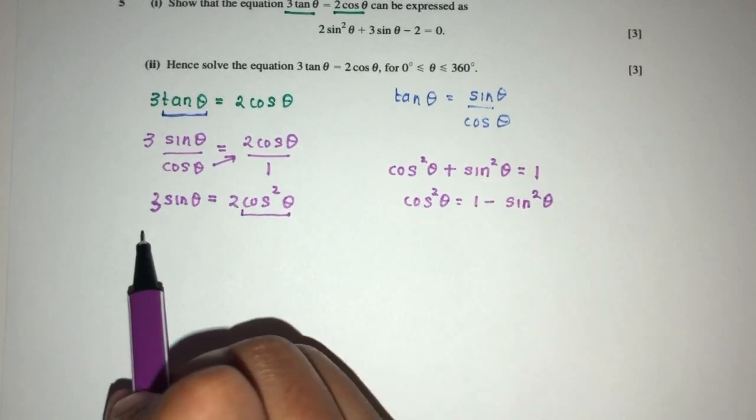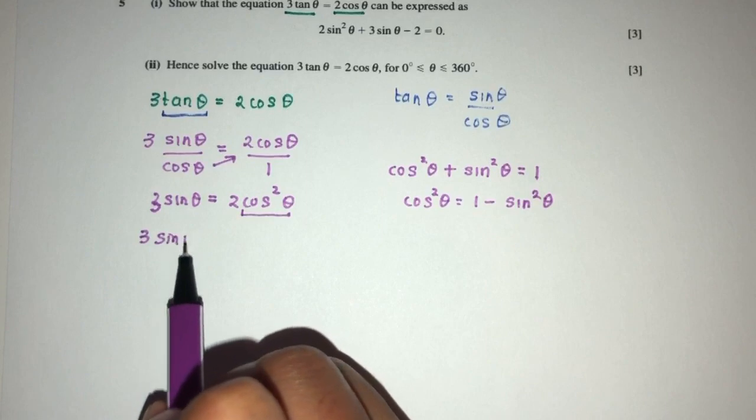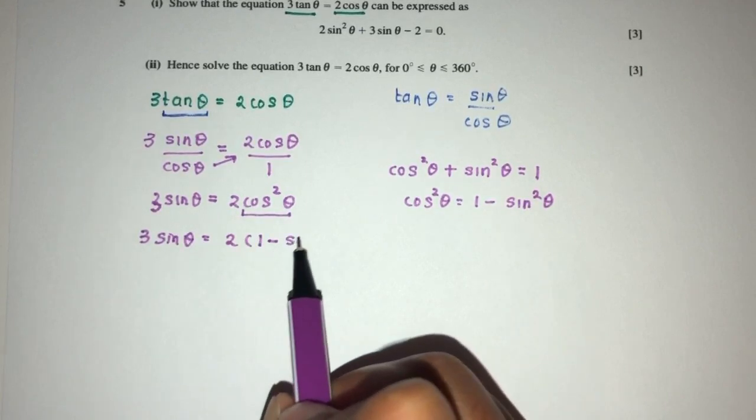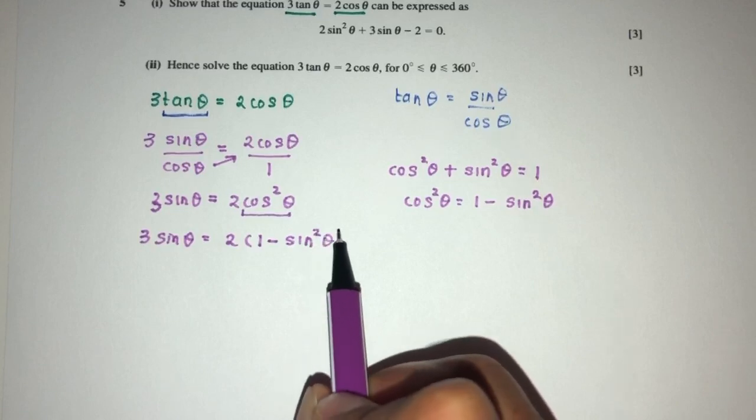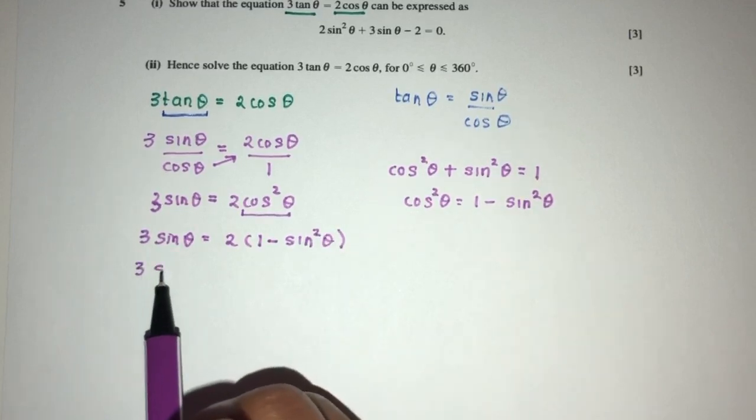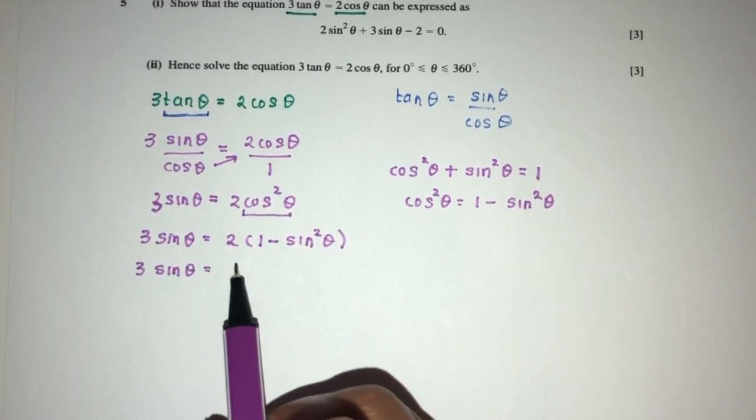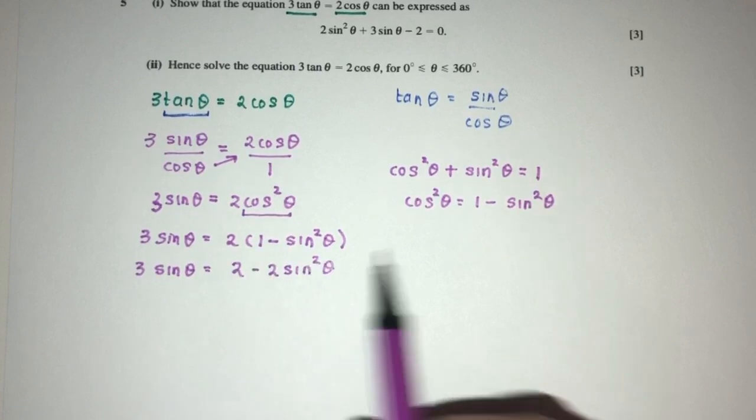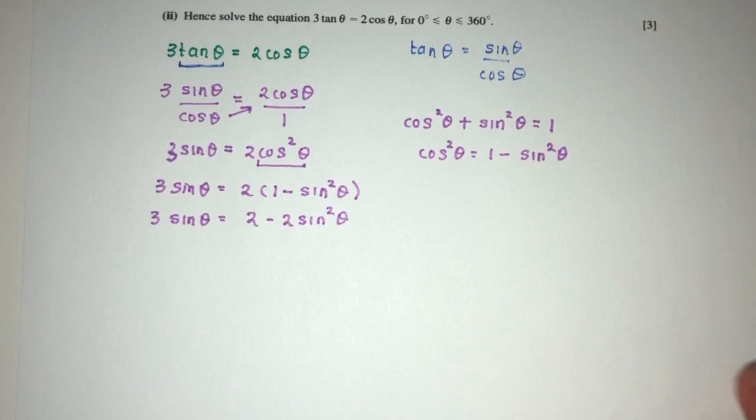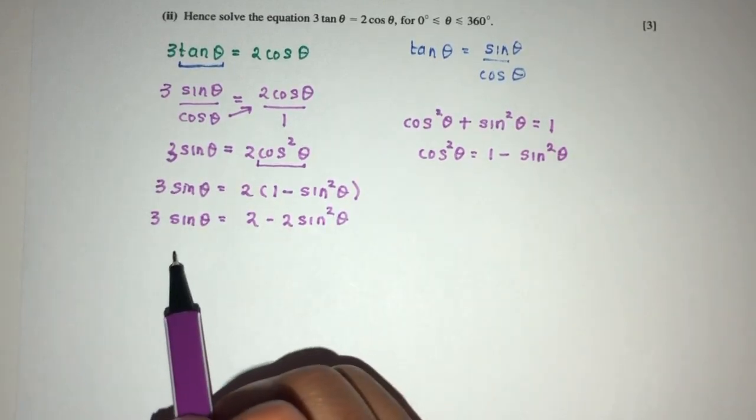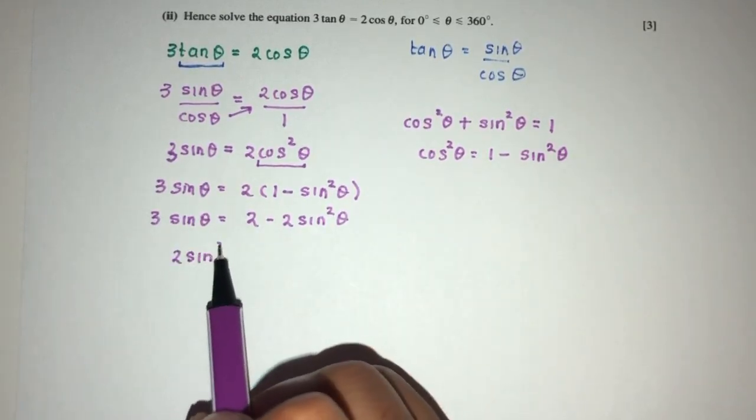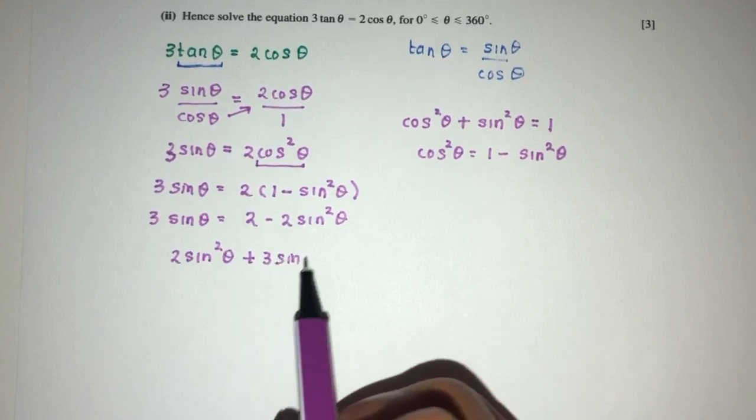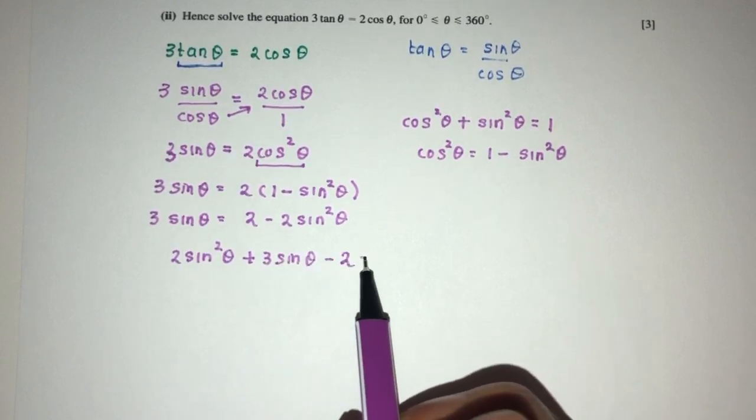Replace. You will have 3sin(θ) = 2(1 - sin²(θ)). So you have 3sin(θ) = 2 - 2sin²(θ). Now, let's send everything to one side.